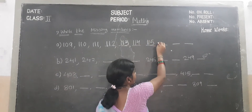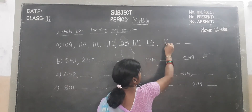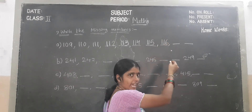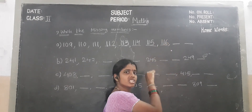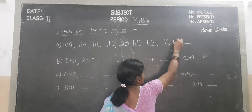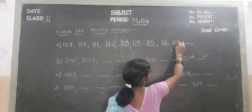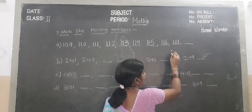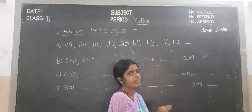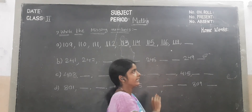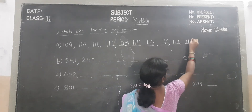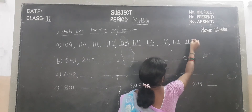We add 1 — which number comes? 116. We add 1 — which number will become? 117. We add 1 — which number will become? 118.